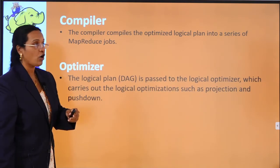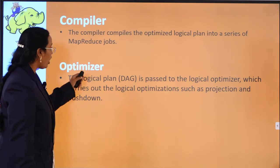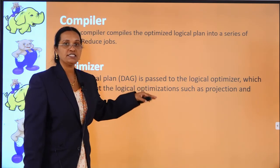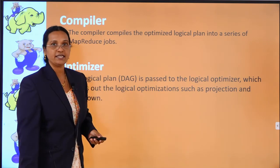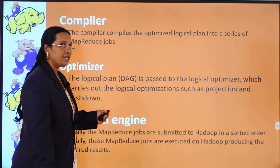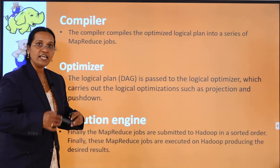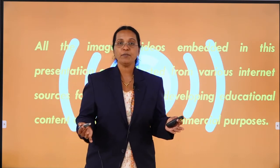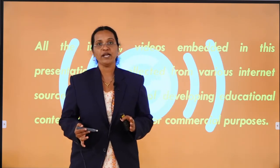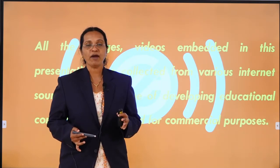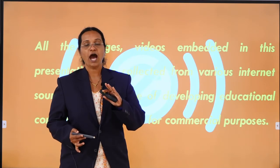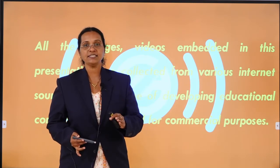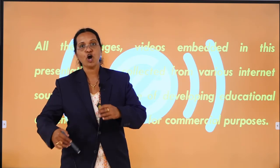The optimizer takes the logical plan and carries out logical optimizations such as projection and pushdown operations. The execution engine processes the final MapReduce jobs in the Hadoop framework. In short, the Pig architecture is driven by four important components: parser, execution engine, optimizers, and compilers. Once the Pig script goes through these components, it goes to HDFS where MapReduce jobs are processed.